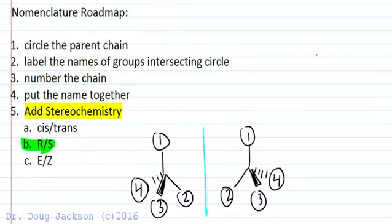Let's add stereochemistry to our nomenclature roadmap for IUPAC nomenclatures. After we put the name together, we've got a name of a constitutional isomer of a compound, full IUPAC name, then we've got to add in stereochemistry if necessary.